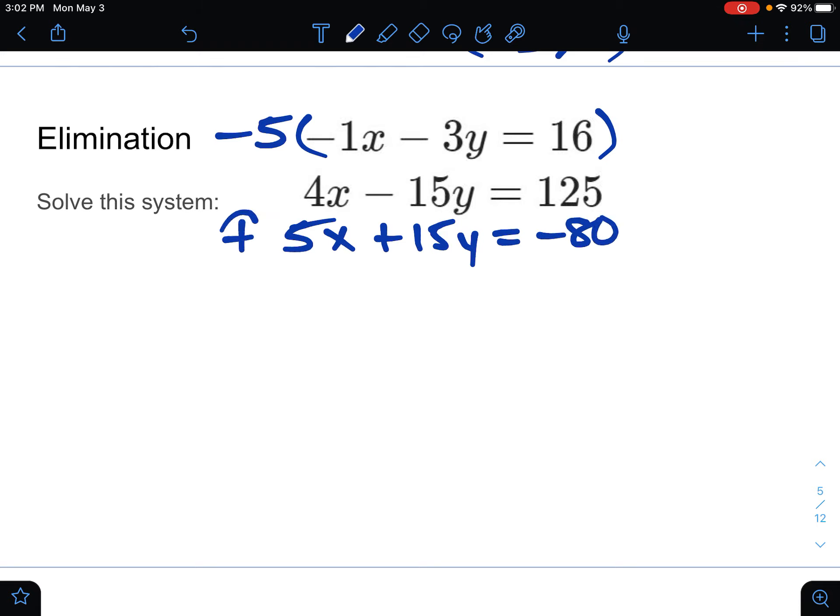Now I'm going to add those two together and the y's will eliminate because they make 0y. So 9x on the left equaling 125 minus 80, or plus a negative 80, I should say, is 45. Divide both sides by 9 and we get our x, which is 5.